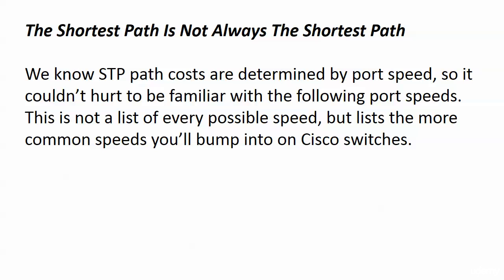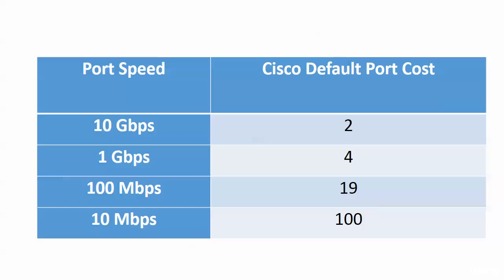Let me show you what I'm talking about as we look at a couple of port speeds that are good to know. The STP path costs are determined by port speed. To this point we've only seen 100 meg ports, since that's the default on Cisco switch ports. But we may see some good old regular Ethernet — 10 meg — come into play, and you can see that's a pretty big difference in cost: 100 versus 19.